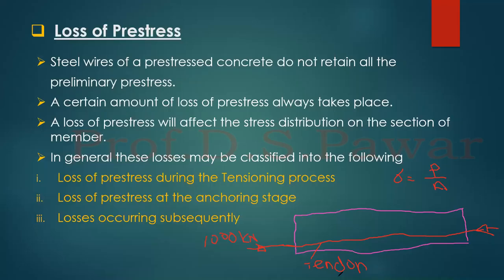This is a pre-stressed concrete beam. We are going to provide a tendon here and apply the pre-stressing force on the tendon. Suppose this value is 1000 kN. We need to calculate the stresses in concrete. Stress is equal to force over area, so if you know the pre-stressing force and the cross-sectional area, you can get the stresses.